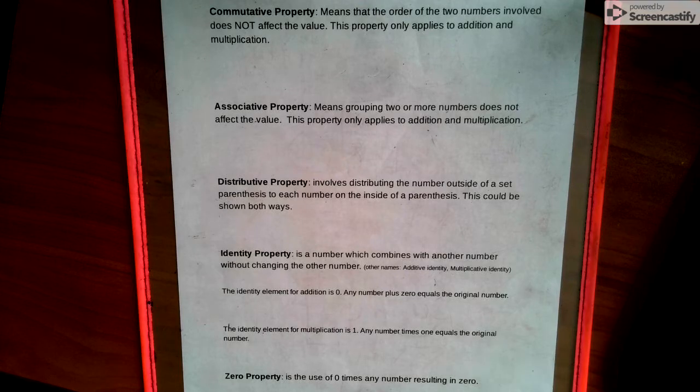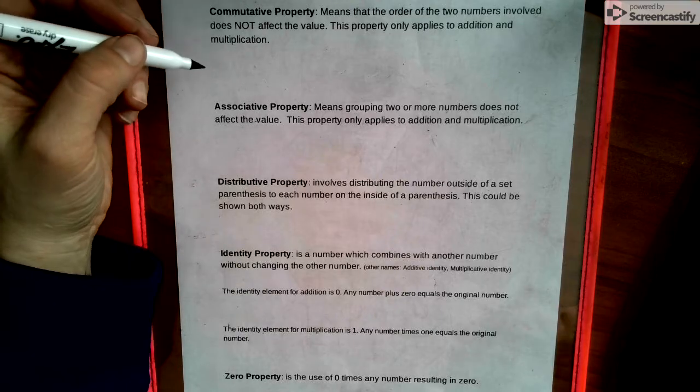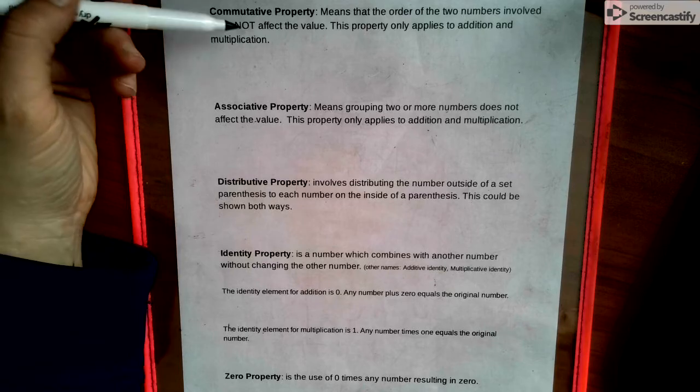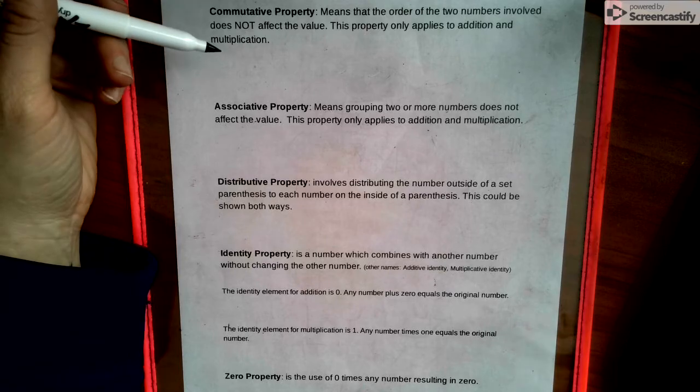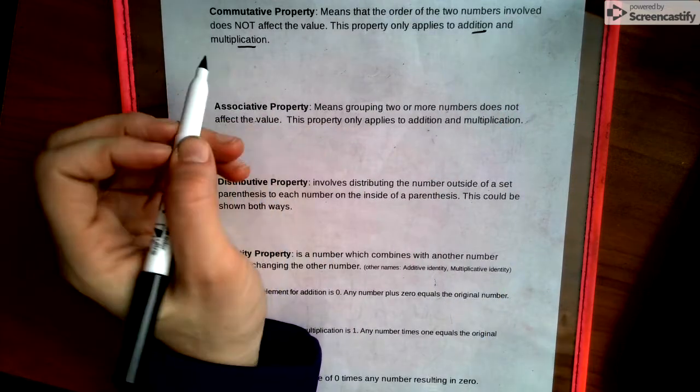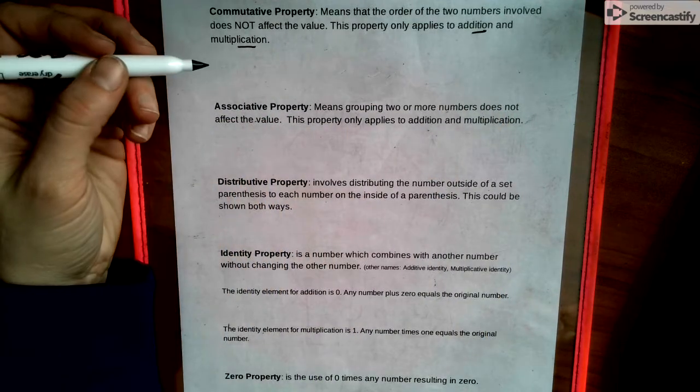So commutative property means that the order of the two numbers involved does not affect the value of it, and it only applies to addition and multiplication. So if you're in my actual class, you need to make sure you're writing everything down that you see.